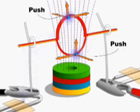Charges moving to the right at the top of the loop feel a push into the screen, while charges moving to the left at the bottom of the loop give a push out of the screen.